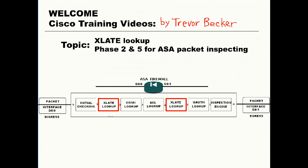A host Xlate entry can be created in the Xlate table by one of two ways. The first way is dynamically, which is automatically created as new connections are initiated. The second way is statically — a host Xlate entry in the Xlate table can be statically defined before any active connections are formed. However, that static Xlate entry is not actually created and used until the traffic defined in that Xlate entry passes through the firewall and forms a connection using that statically defined Xlate entry.